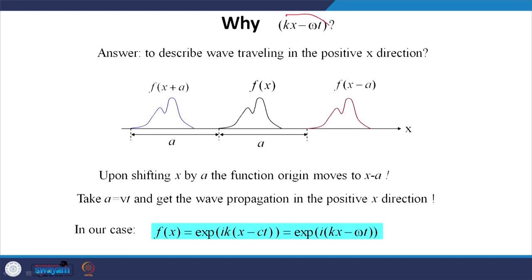Why do we choose a k x minus omega t type of solution? Because we want to describe a wave travelling in the positive x direction. If you shift x by a, the origin of the function moves to x minus a. If a equals v t, where v is the velocity of the wave and t is the time, we get wave propagation in the positive x direction. In our case, we have i(kx − ct) for a wave in free space.